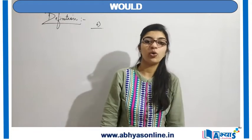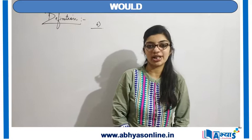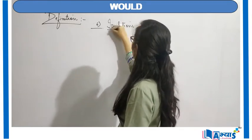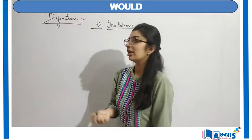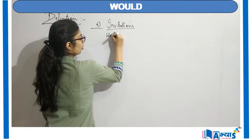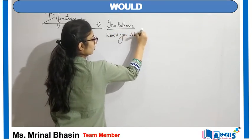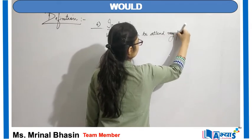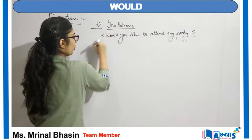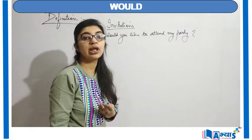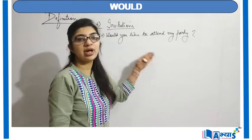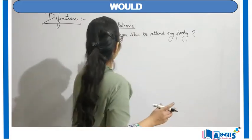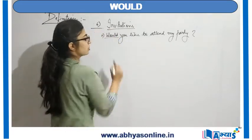The sixth place where 'would' is used is for making some kind of invitations. 'Would' can also be used for invitations. Invitations and requests are basically the same. An invitation can be like: 'Would you like to attend my party?' Here, I am requesting and at the same time giving an open invitation. So a sentence like 'I am inviting you to attend my party' can also be expressed as 'Would you like to attend my party?'